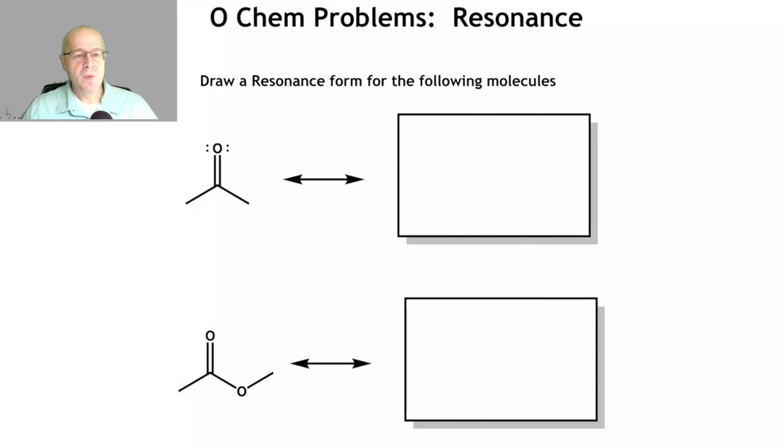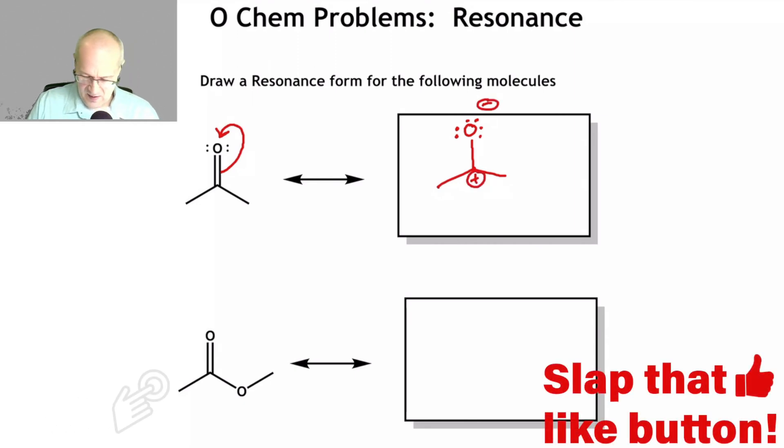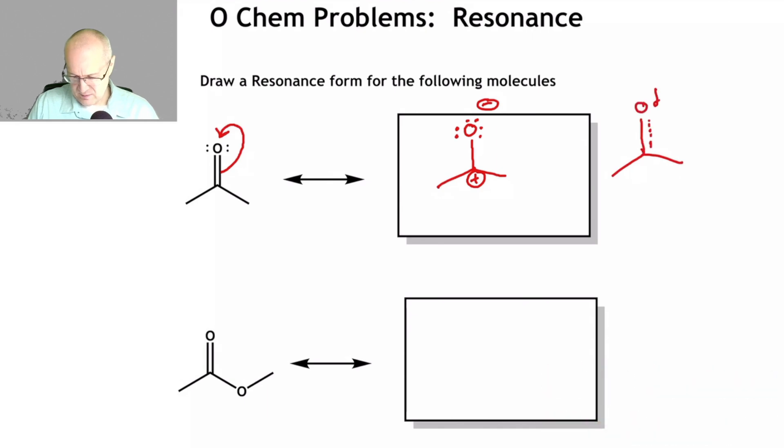We have a carbonyl. So, in a carbonyl, what you can do is you can take these pi electrons and move them to that oxygen. And that will give you this resonance form right here. Plus charge there. And the hybrid structure would look something like this. Where the oxygen is delta negative, the carbon is delta positive.